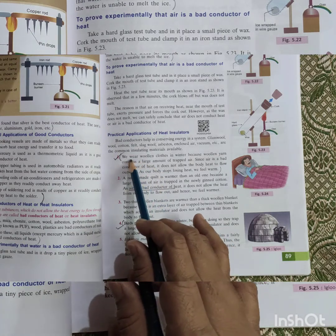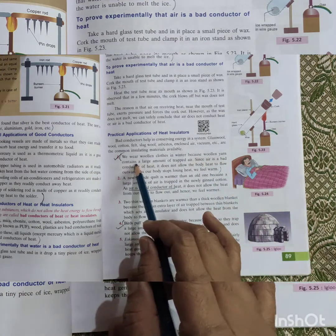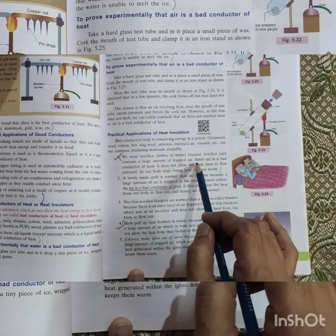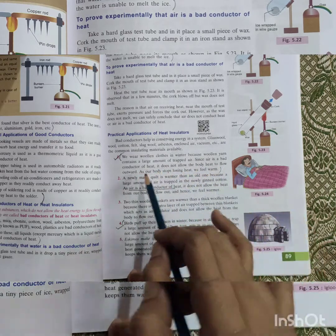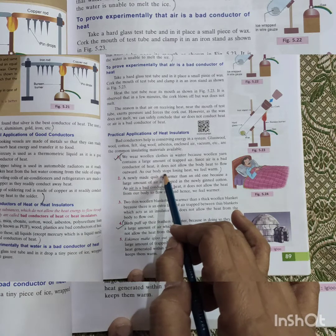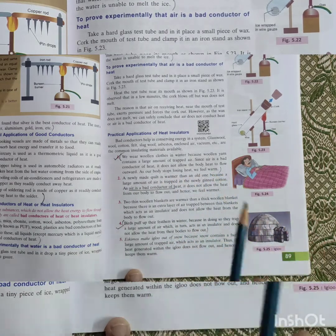Like, we wear woolen clothes in winter because woolen yarn contains a large amount of trapped air. Since air is a bad conductor of heat, it does not allow the body heat to flow outwards. As our body stops losing heat, we feel warm.